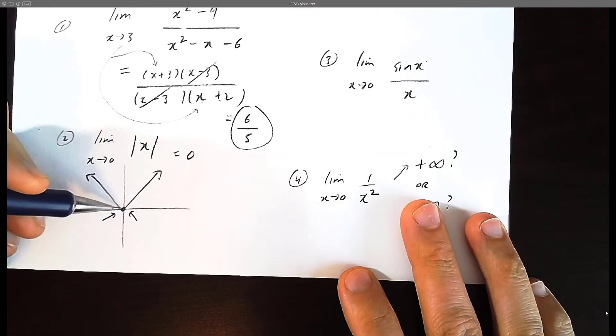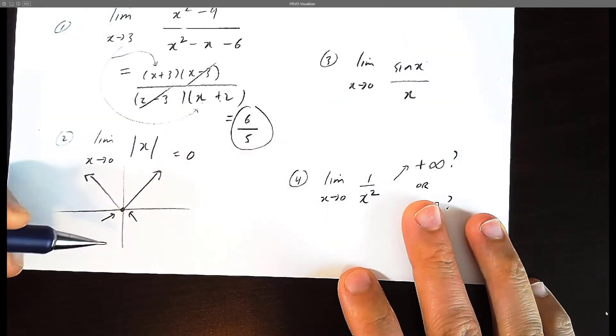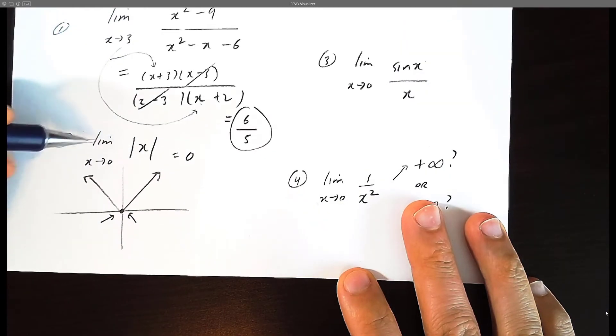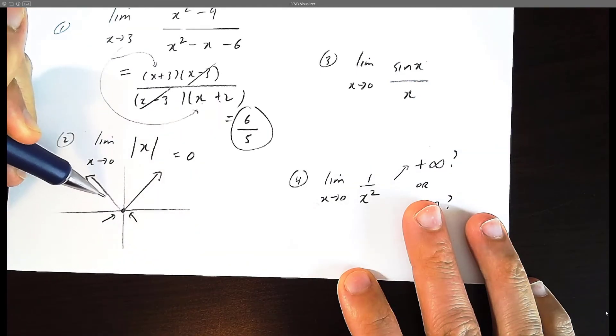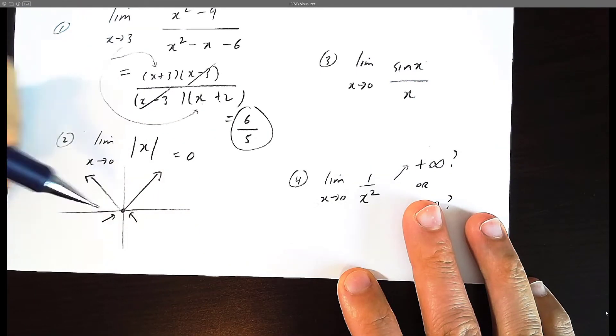By the way, even though there's a hole here, the limit would still be 0. The limit you can have an answer even though the actual point is not defined. It's just what the y-value is tending towards as you become very, very close.